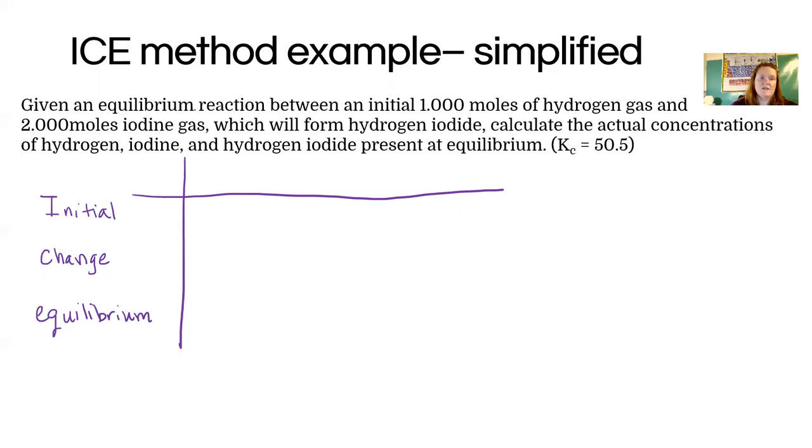So this is useful in a situation where you know where your conditions are at equilibrium and you want to find out what happens when we mess it up. Or it's useful in figuring out how much of any one of the components is present. So here's an example. It says we have equilibrium reaction between an initial amount of hydrogen gas and iodine gas, which forms hydrogen iodide.